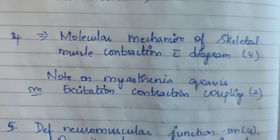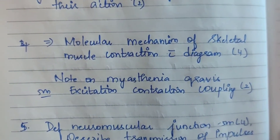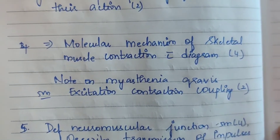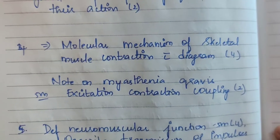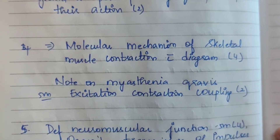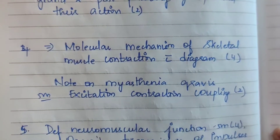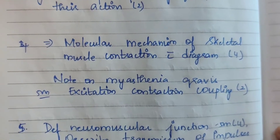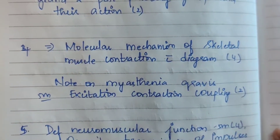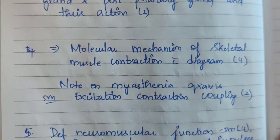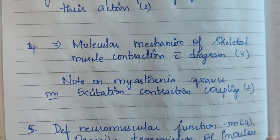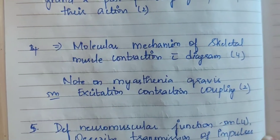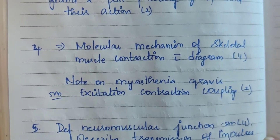Fourth question: Molecular mechanism of skeletal muscle contraction with diagram — asked four times. Mechanism of skeletal muscle contraction with diagram — also asked. Note on myasthenia gravis — one time, 5 marks. Excitation-contraction coupling — asked two times. This is part of the mechanism of skeletal muscle contraction topic.